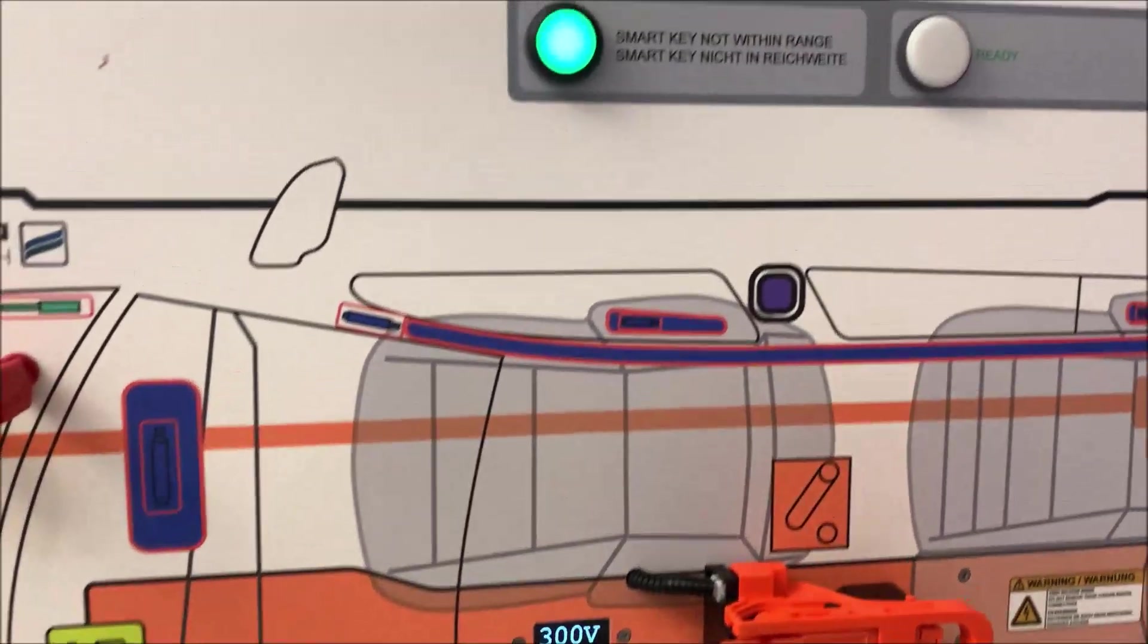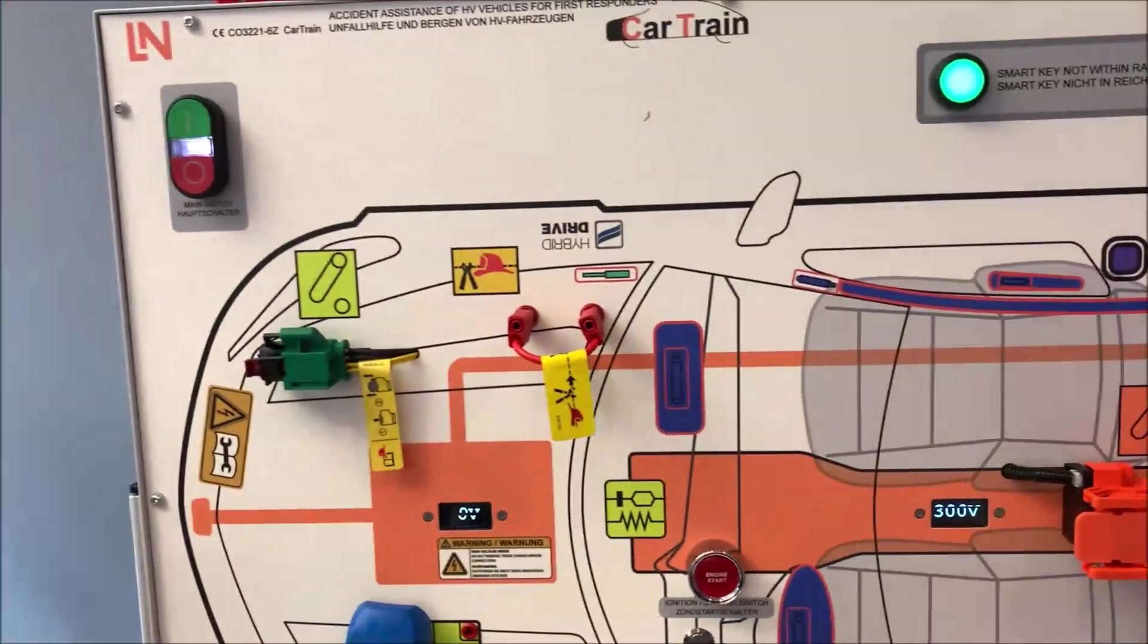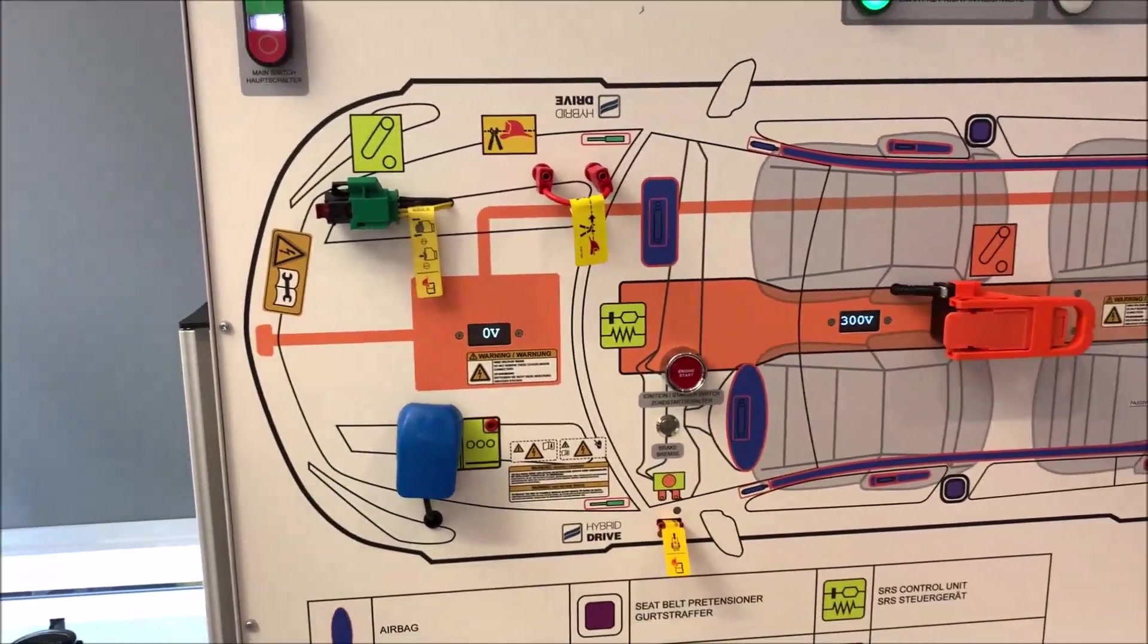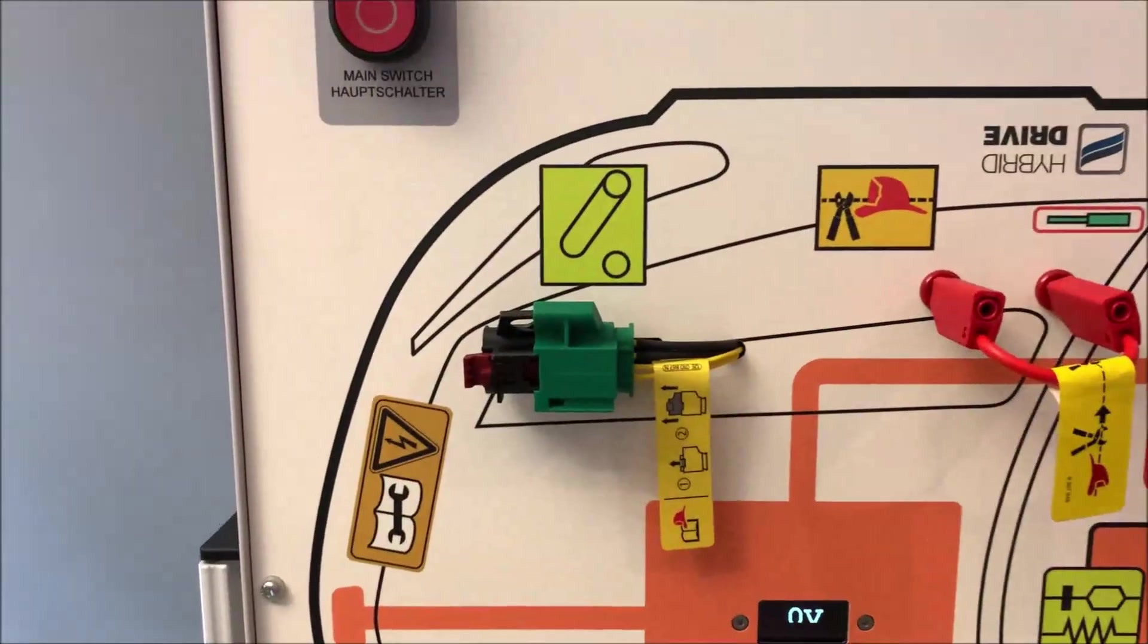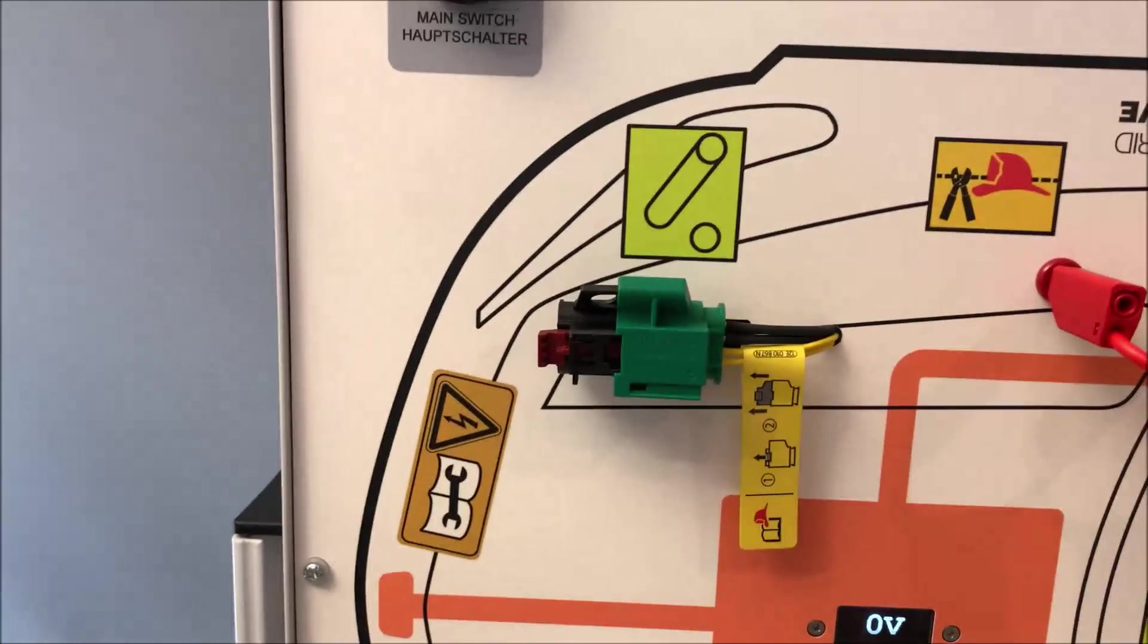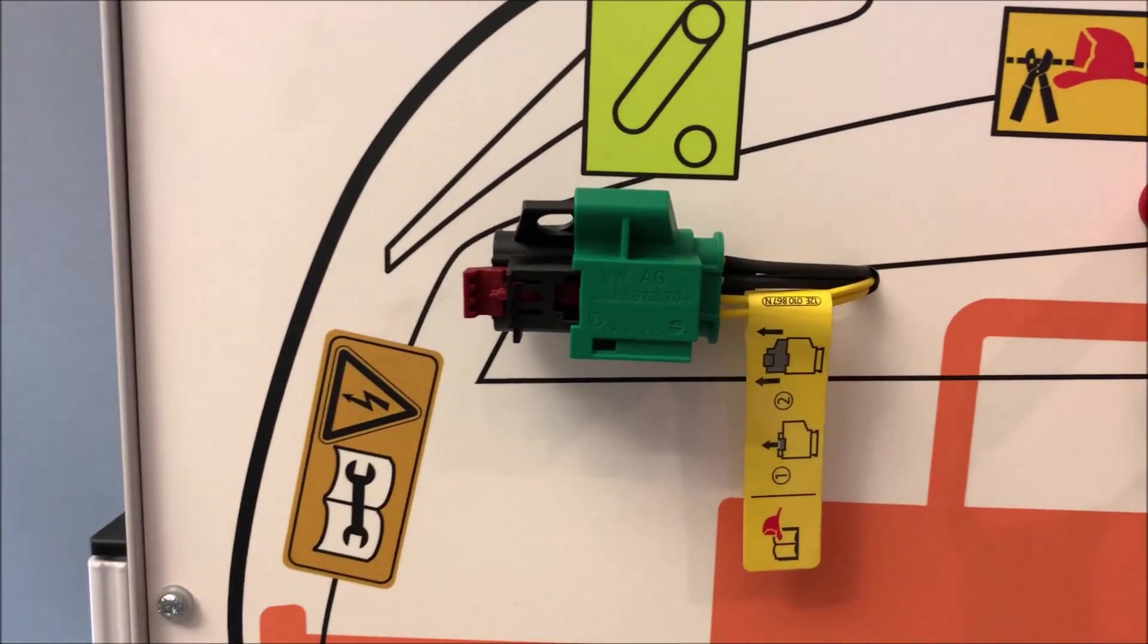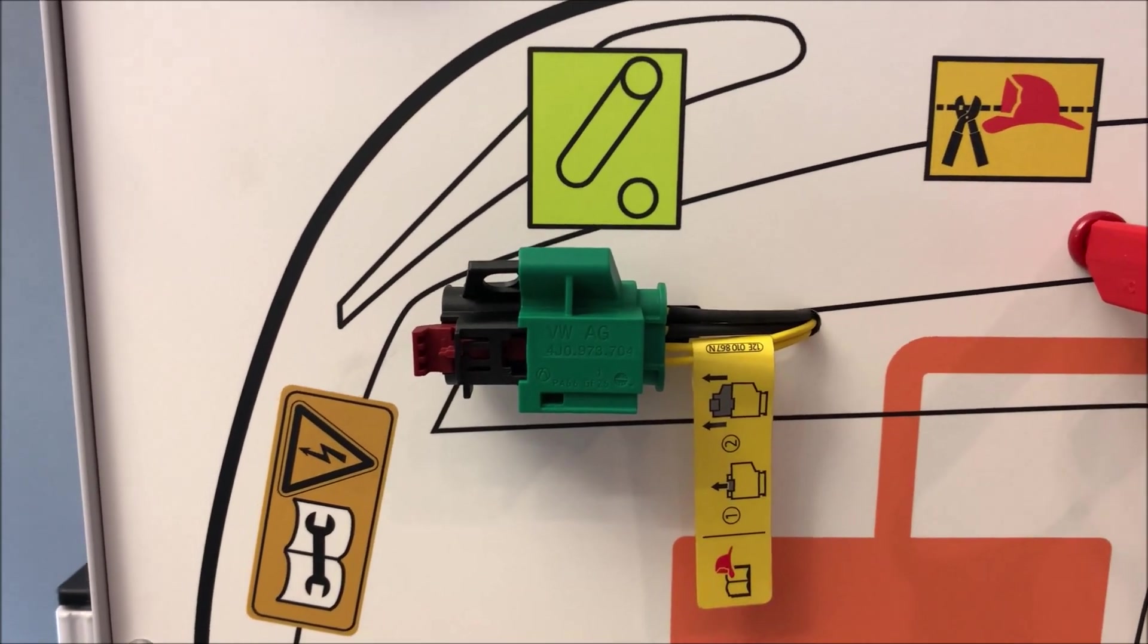If you do it in ready mode and do not shut it down before, you will get a high voltage fault. Always make sure when you shut it down inside the workshop that you follow the instructions - shut down the high voltage system before and do anything else the car manufacturer is asking you. This one is used for example by Audi, Volkswagen, Skoda, Seat, and also by BMW.